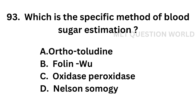Question number 93. Which is the specific method of blood sugar estimation? Option A: Ortho-tolidine. Option B: Folin-Wu. Option C: Oxidase-Peroxidase. Option D: Nelson-Somogyi.